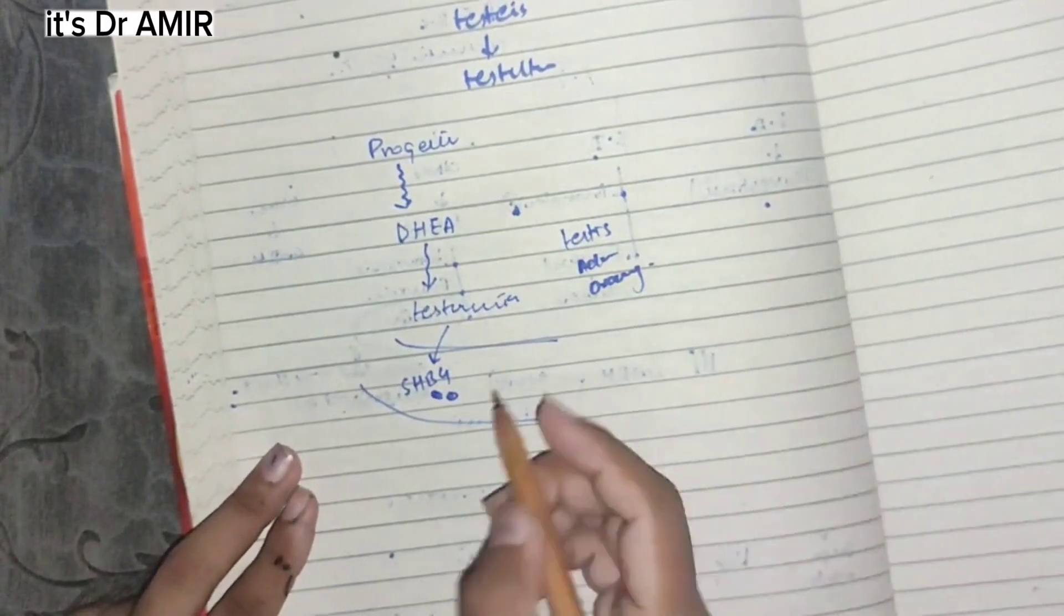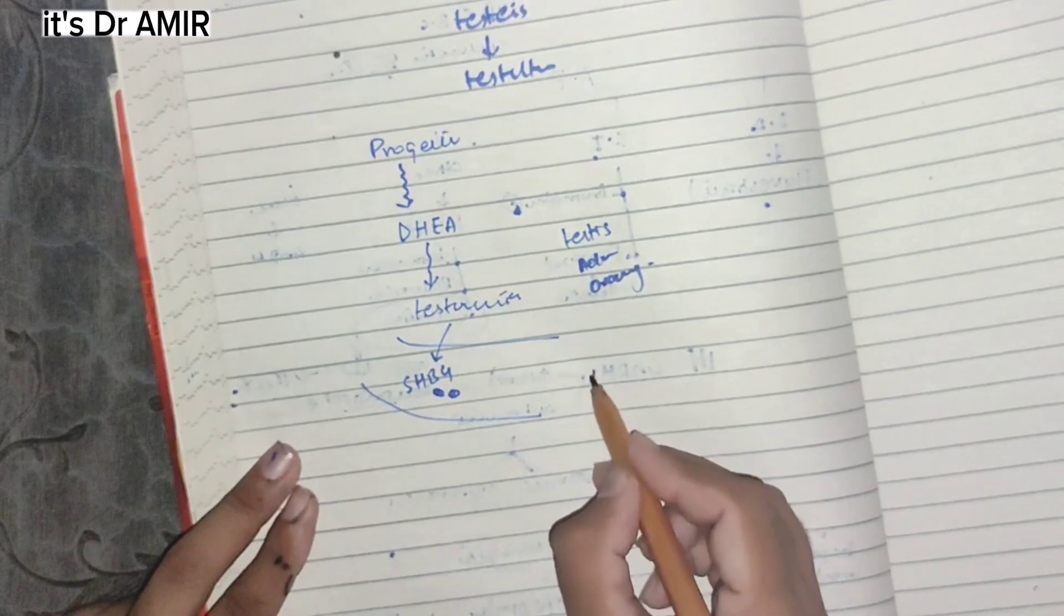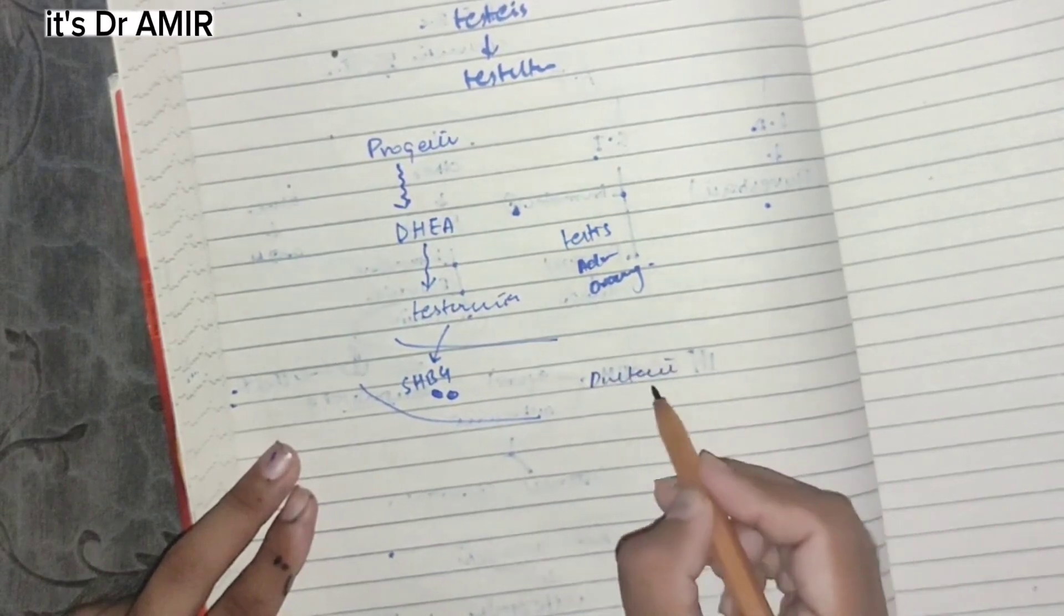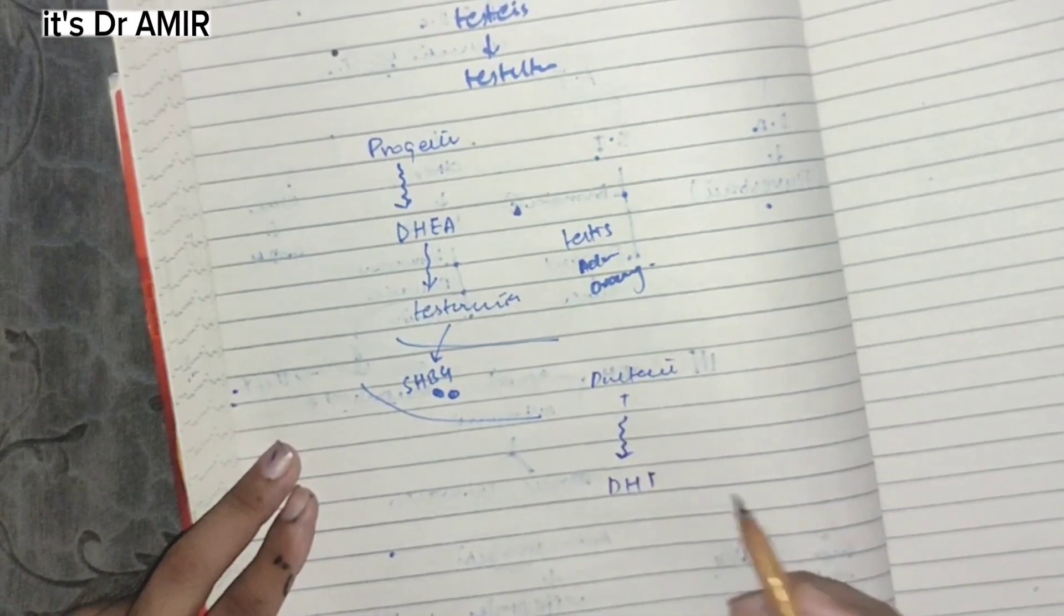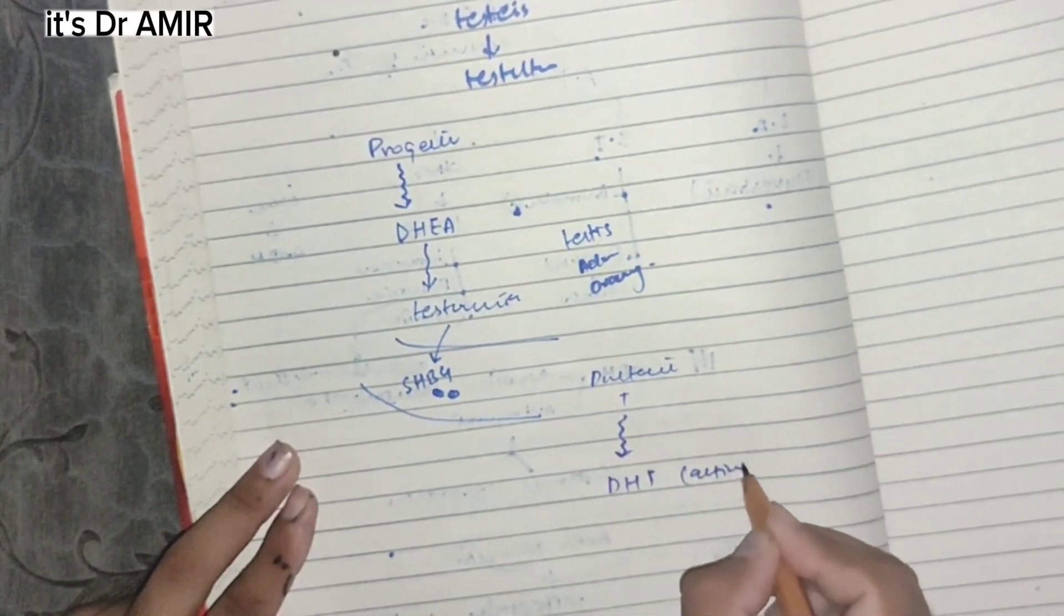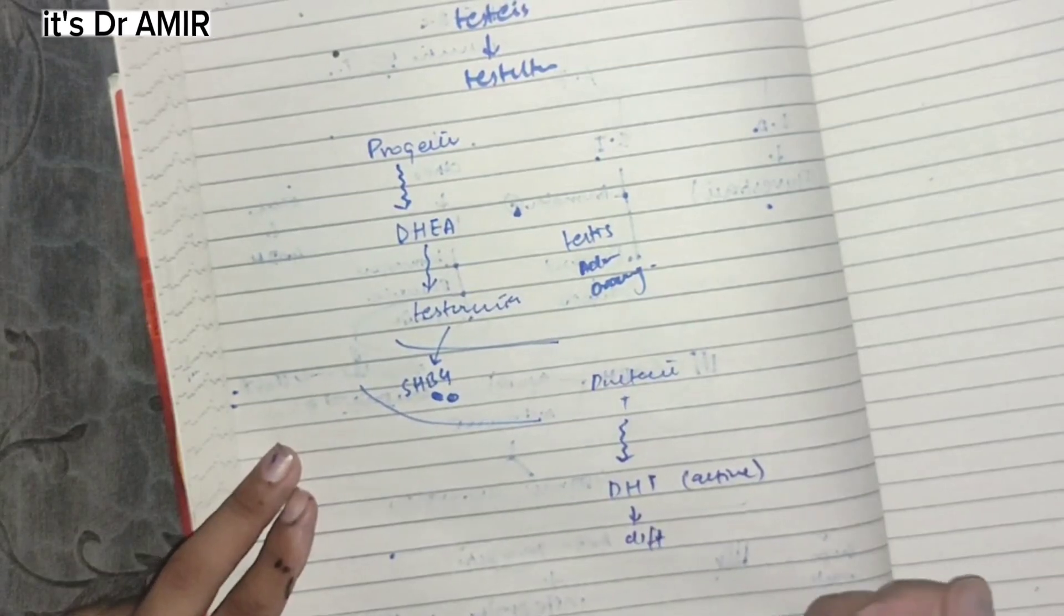Testosterone binds with sex hormone binding globulin, then binds with plasma and travels. When it reaches the prostate gland, it is converted into dihydrotestosterone (DHT). DHT is the active form and will perform different functions.